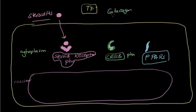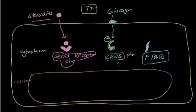For the second pathway — let's say this is glucagon. The glucagon receptor is usually a cell membrane receptor. After activation at the cell membrane receptor, you eventually activate CREB — the cyclic AMP response element binding protein.